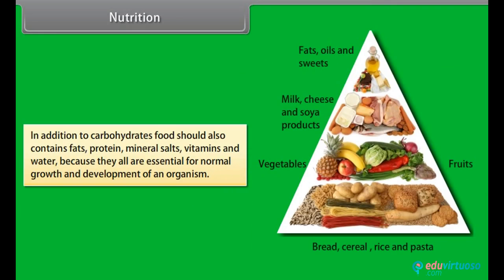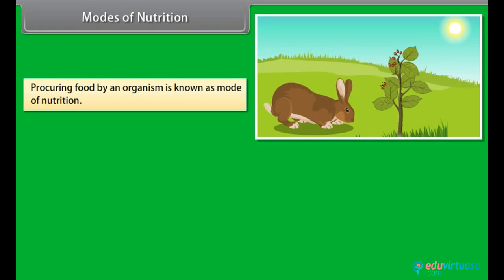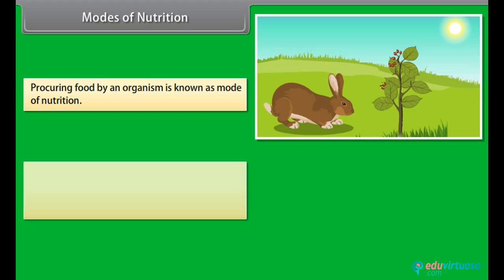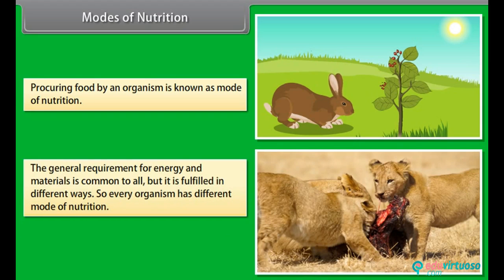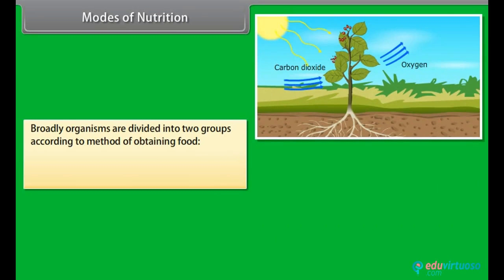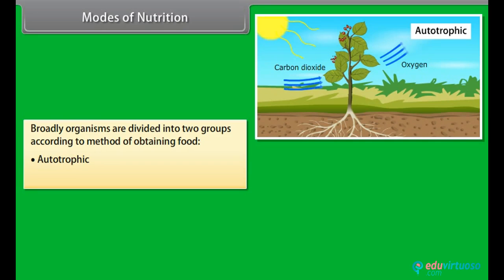Starch and glucose in combined form are known as carbohydrates. When we require instant energy, we should take carbohydrates. In addition to carbohydrates, food should also contain fats, protein, mineral salts, vitamins and water, because they are all essential for normal growth and development. Procuring food by an organism is known as its mode of nutrition. Broadly, organisms are divided into two groups according to their method of obtaining food: autotrophic and heterotrophic.